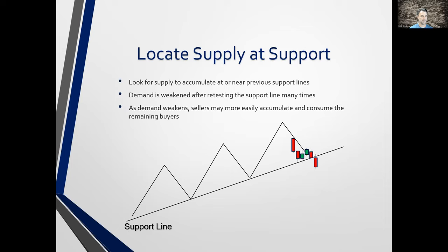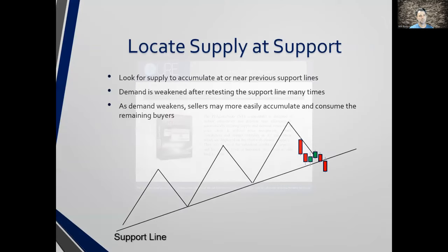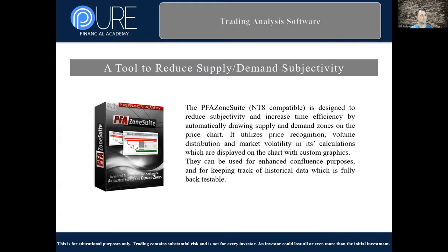We locate supply at support — we accumulate at the support line, consume it, and move through it. Now I know I have supply on my side and if I'm in the correct location — larger picture, selling high, for example — we've been in an uptrend. Buy low, sell high.